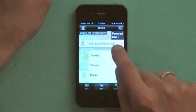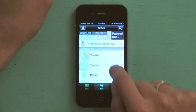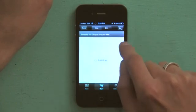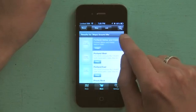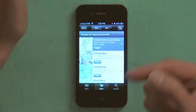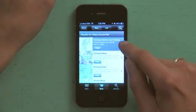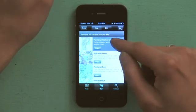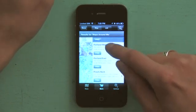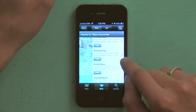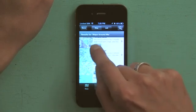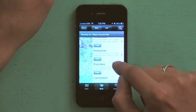Now, if I tap find maps around me, PDF Maps will search for all of the locally available maps that might be handy for me. So I'm in Portland, Maine. I've got Portland Harbor and Vicinity, Portland West, Portland East. And you notice that these come from the USGS, from the US Geological Survey.